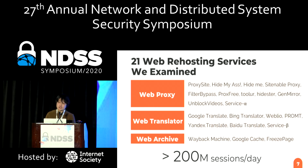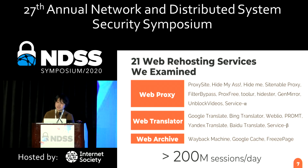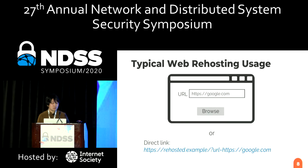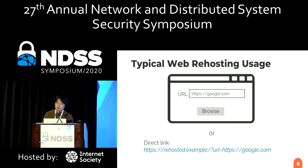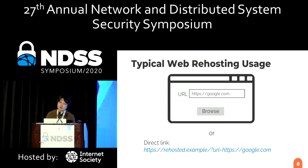We experimented with 21 major web rehosting services, including Google Translate, WebMachine, Google Cache, and Blocky site. The total number of accesses for these services exceeds 200 million per day. A user requests web rehosting to rehost Google.com by using web forms or direct links. Web rehosting generally rehosts a URL like Google.com given from a query string to the domain of the web rehosting, like rehosted.example.